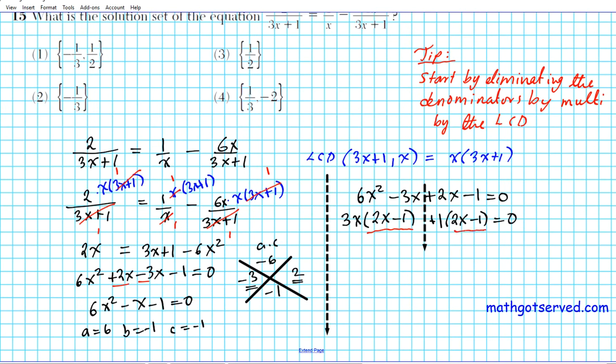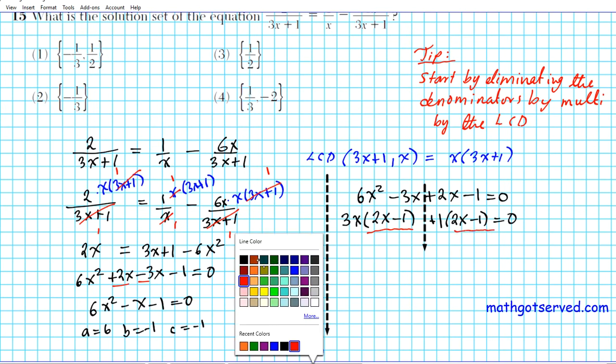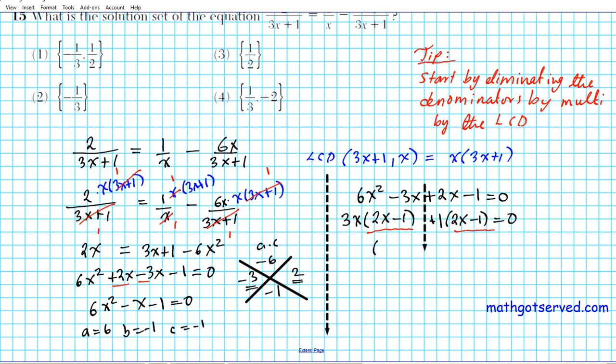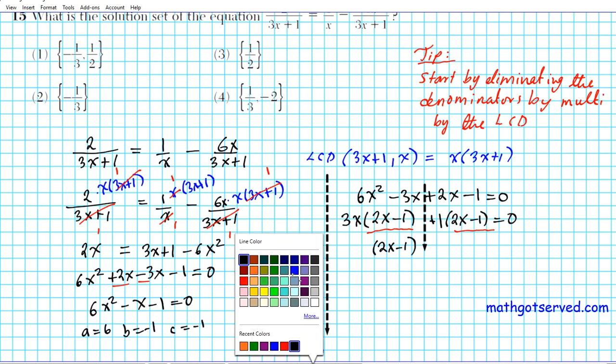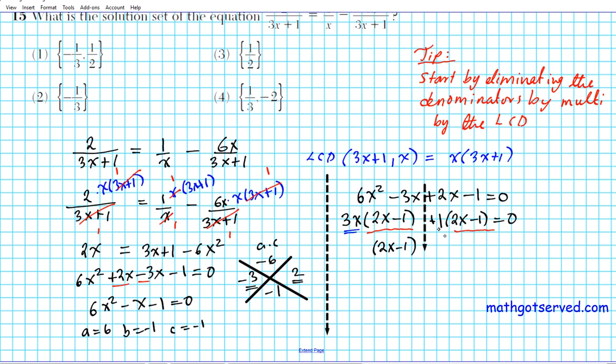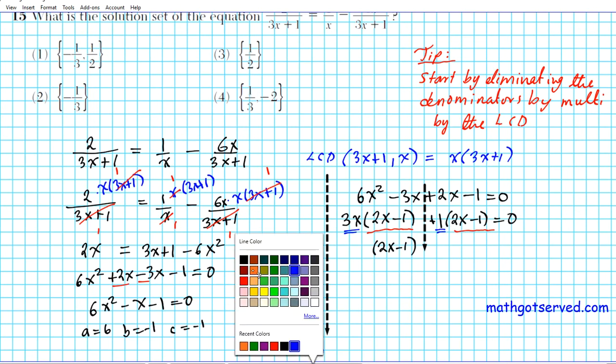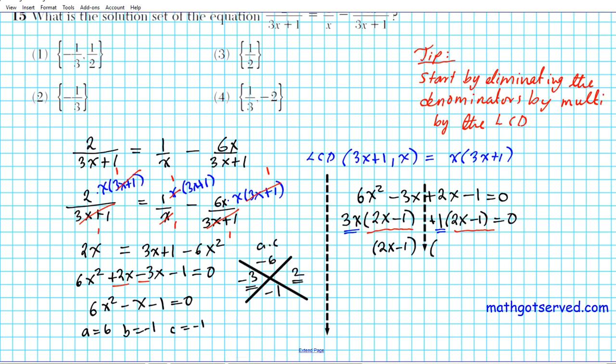Let's factor out the identical quantities, which is 2x minus 1. Factor that out and then you have 2x minus 1, and what's left out is the coefficients of that quantity 2x minus 1. Those two are grouped together in their own nice little parenthesis: 3x plus 1.